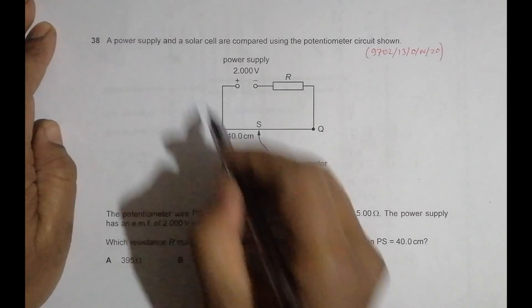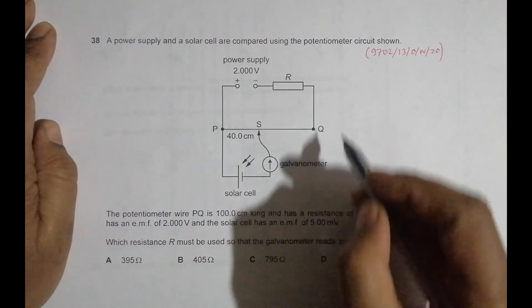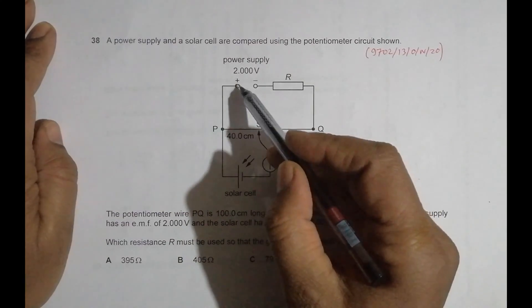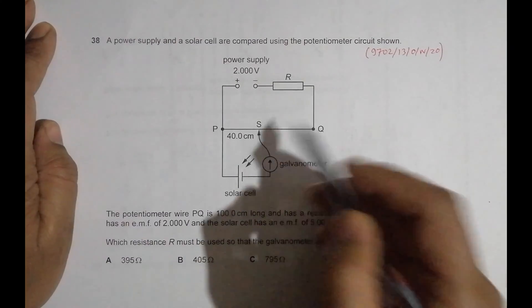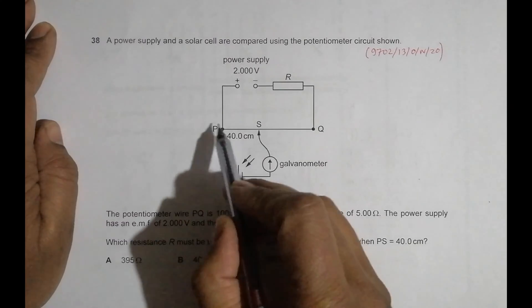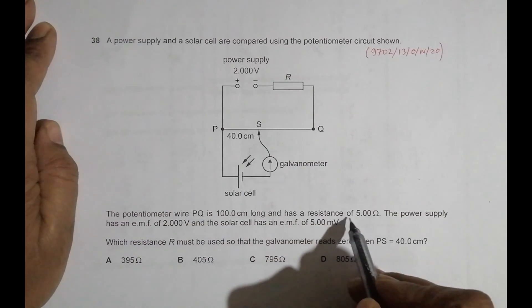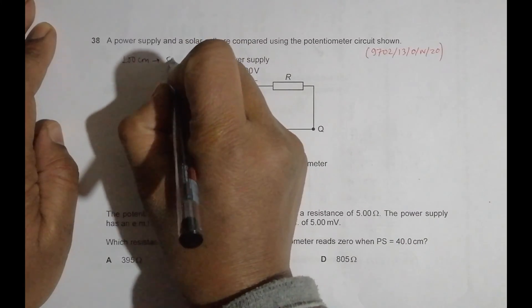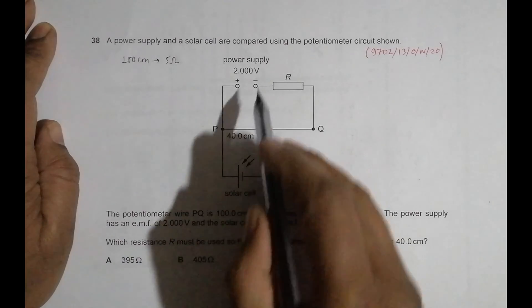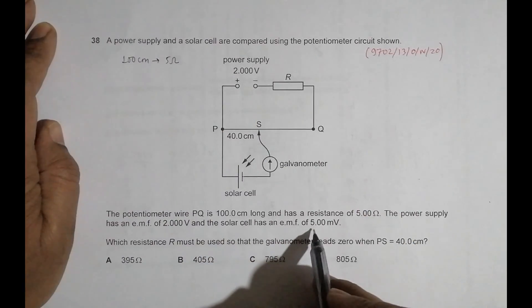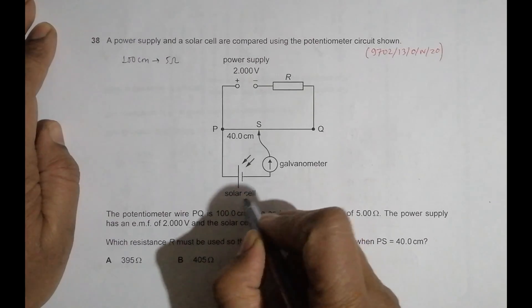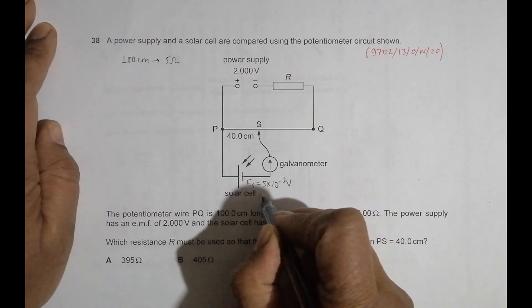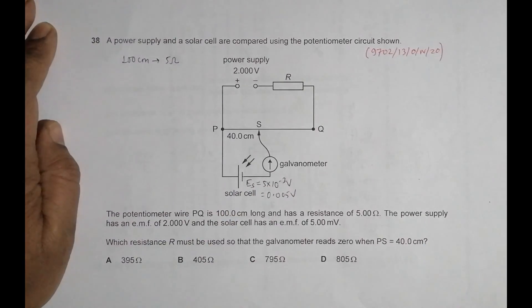This question is concerned with the chapter 'Current Electricity' — it is about a potentiometer. A power supply and a solar cell are compared using a potentiometer circuit. The potentiometer PQ is 100 cm long and has a resistance of 5 ohm, so 100 cm corresponds to 5 ohm. The power supply has an EMF of 2 volt, and the solar cell has an EMF of 500 millivolts, which is 0.005 volt.